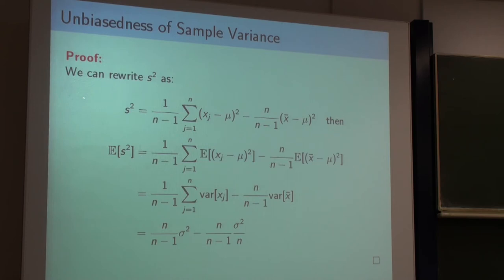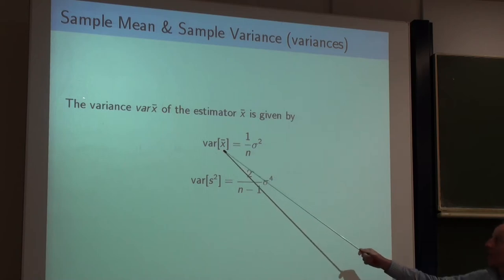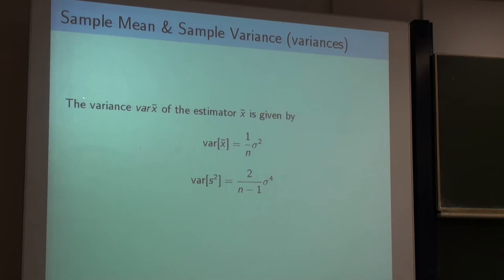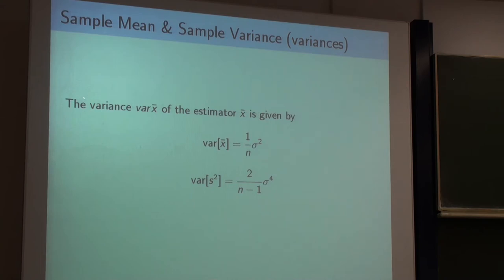Any questions? We don't prove this here, but the variance of the mean is what we already know from the central limit theorem. And this is the variance of the sample variance — how does the sample variance vary? It goes proportional to sigma to the fourth power.